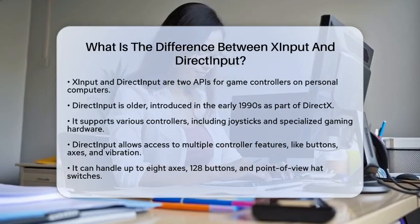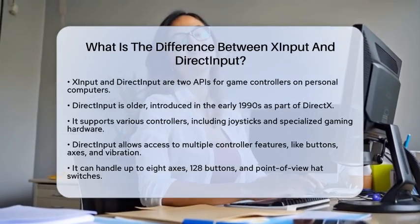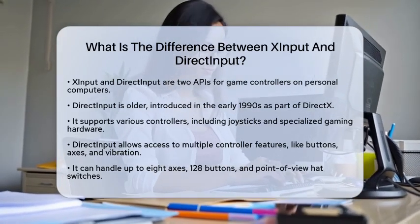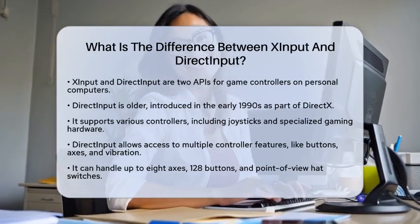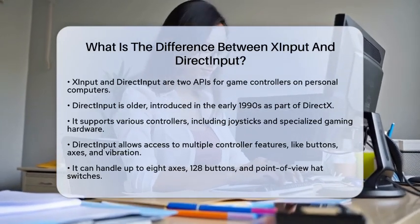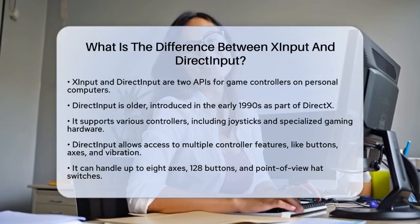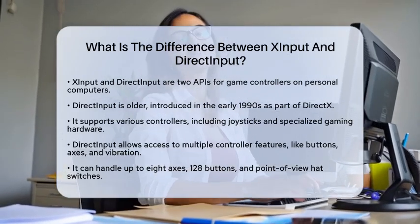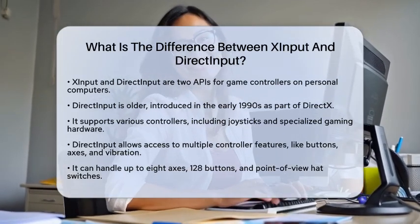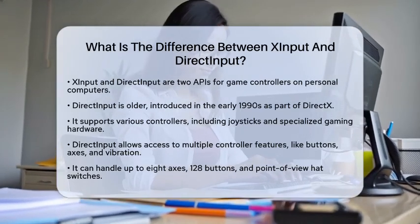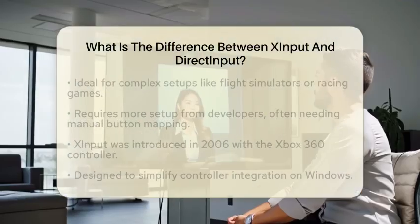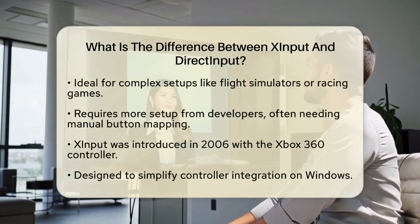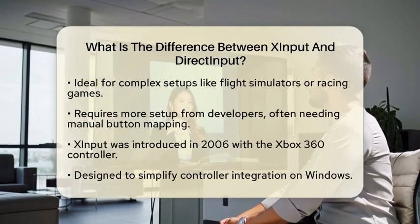DirectInput is the older of the two, introduced in the early 1990s as part of the DirectX suite. It supports a wide variety of controllers, including joysticks and specialized gaming hardware. This API allows games to access many features of a controller, such as buttons, axes, and vibration. DirectInput can handle up to 8 axes, 128 buttons, and point-of-view hat switches. This makes it ideal for complex setups like flight simulators or racing games.